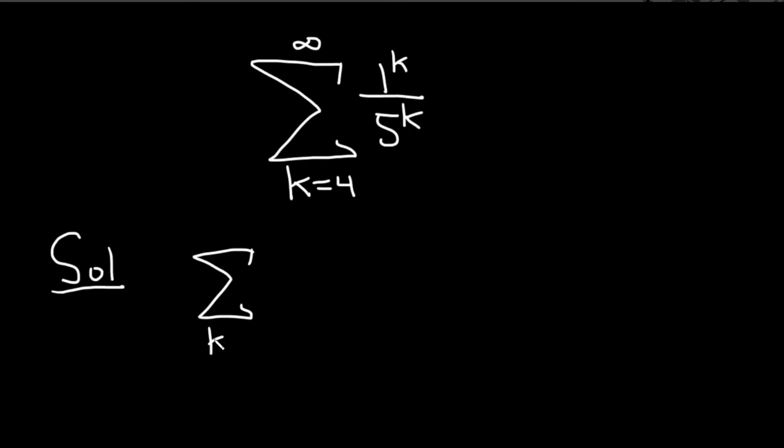You can take a step further and write it like this. We're going from 4 to infinity, now we can write it as 1 over 5 to the k. You see it fits the form of an infinite geometric series. An infinite geometric series has this form here: a r to the k. That's the general form of an infinite geometric series.